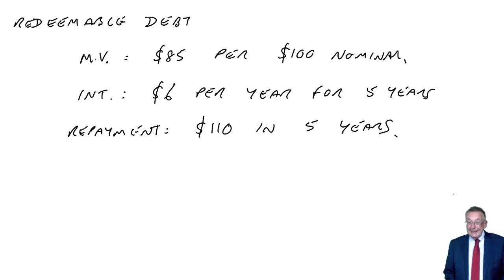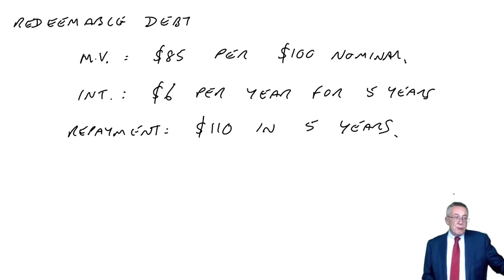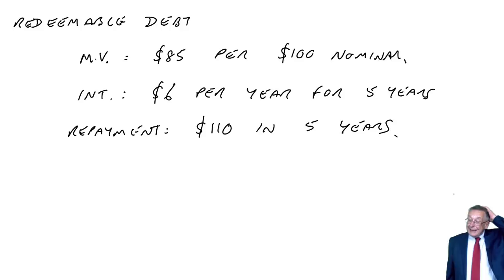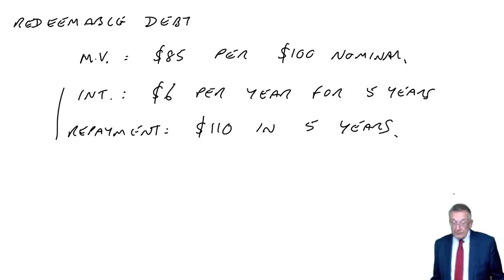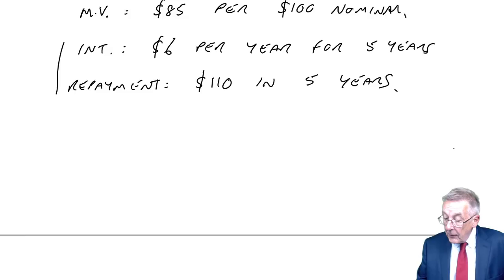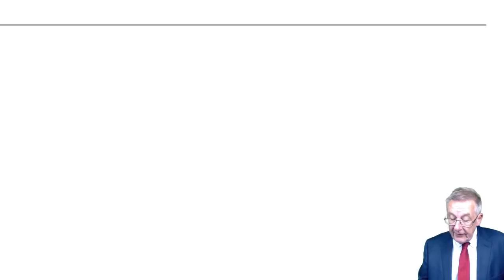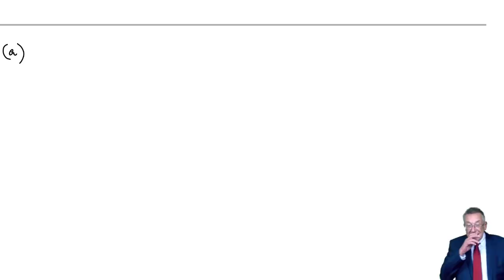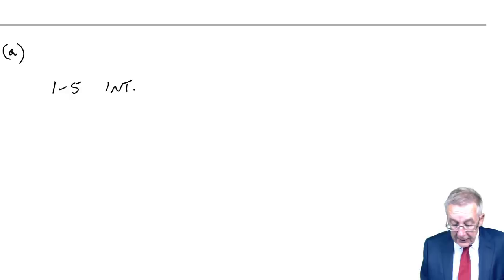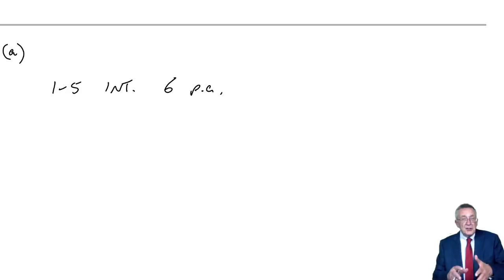We use the same basic principle we used right at the beginning when we looked at equity. We say that the market value is the investors who determined it, and it's the present value of the future receipts, the interest, the repayment, discounted at their required rate of return. So, for part A, the return to investors, what are the investors going to be getting? For 5 years, so 1 to 5, they're getting interest of $6 a year. Always do this on $100 nominal, one new bit. And then in 5 years' time, they're getting the repayment or redemption. We just said, $110.